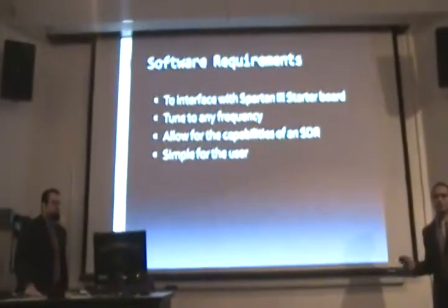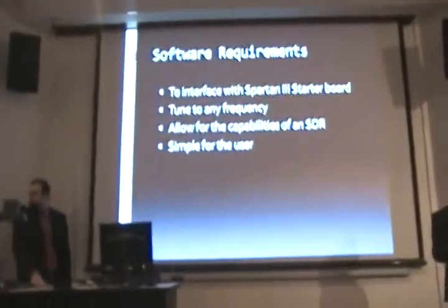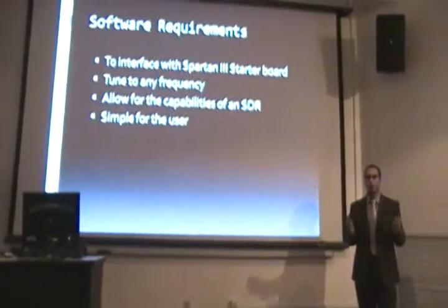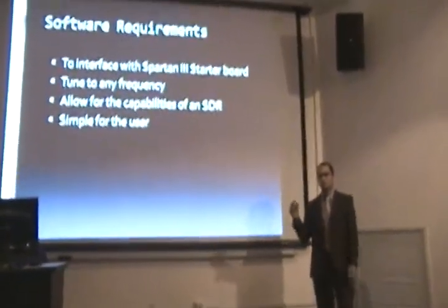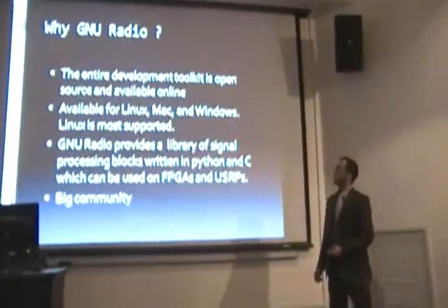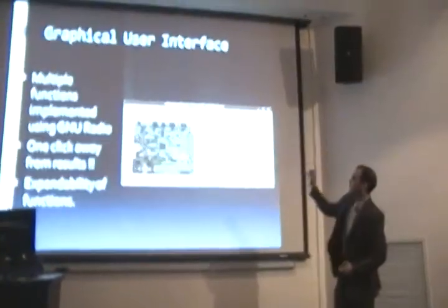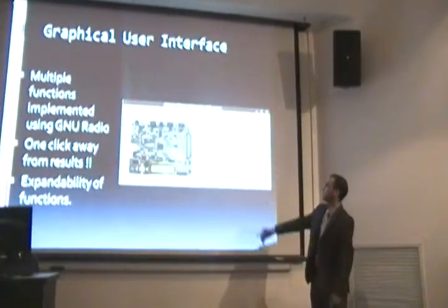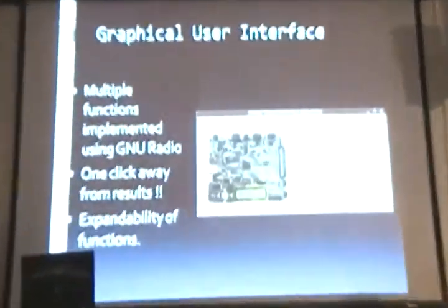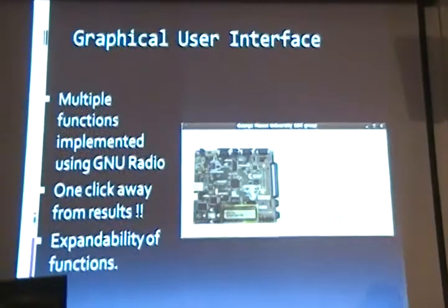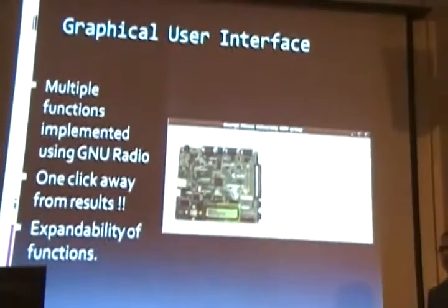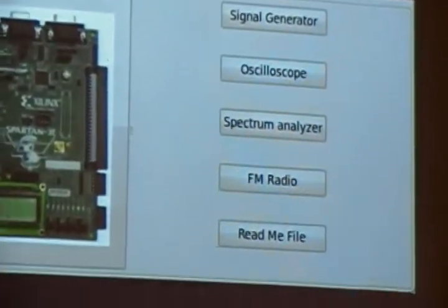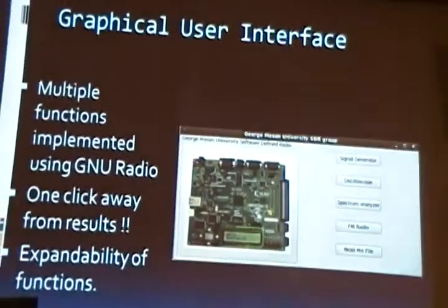The signal processing blocks from GNU Radio were used to implement our graphical user interface. We tried to make the GUI as simple as possible — the user should be able to simply click a button and get all the results they want. For example, the signal generator: just click and you can control it. You also have an oscilloscope, a spectrum analyzer, and extra functionality like FM radio just to demonstrate the capabilities of the hardware.